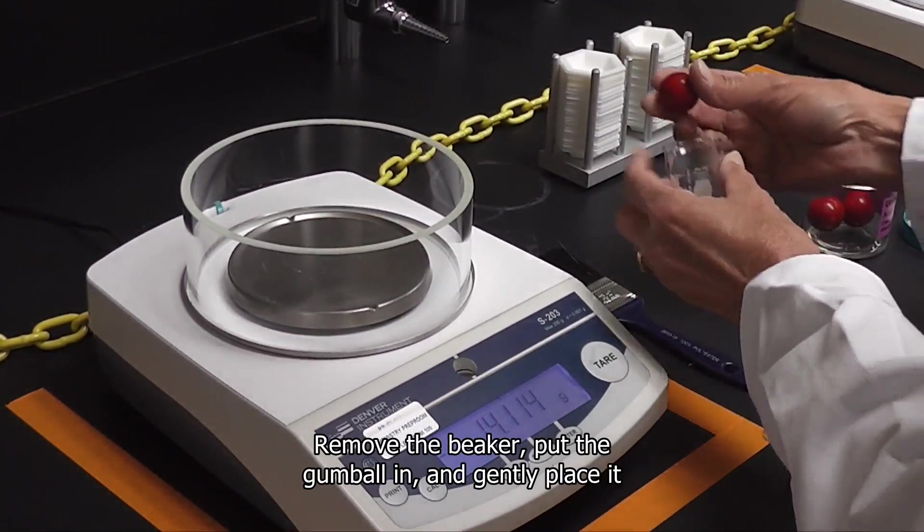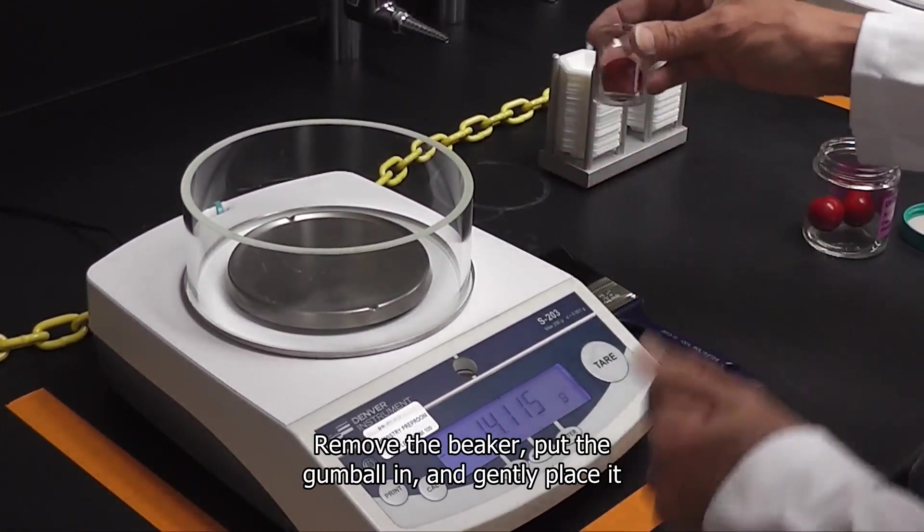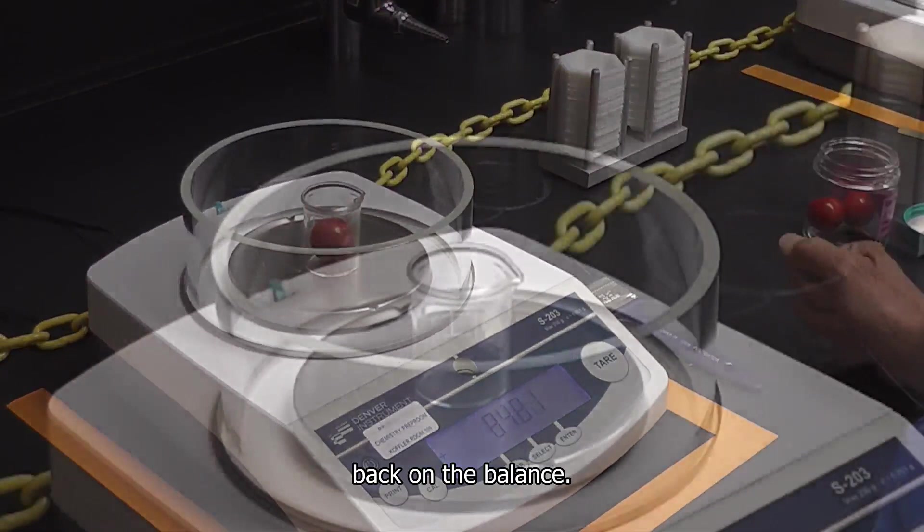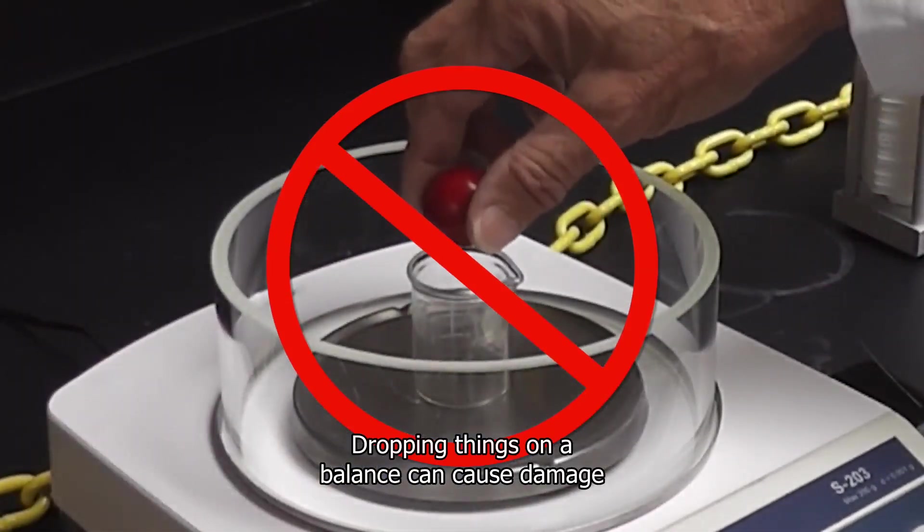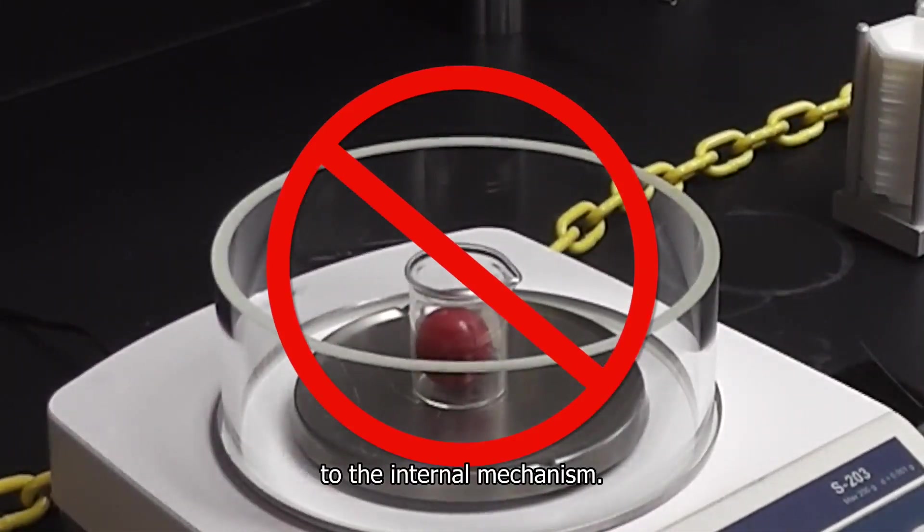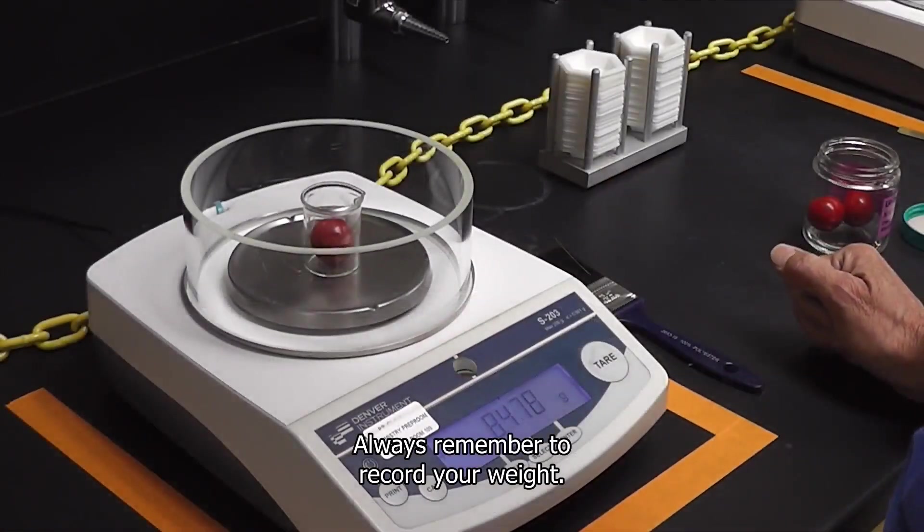Remove the beaker, put the gumball in and gently place it back on the balance. Dropping things on a balance can cause damage to the internal mechanism. Always remember to record your weight.